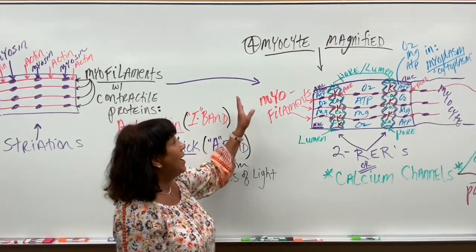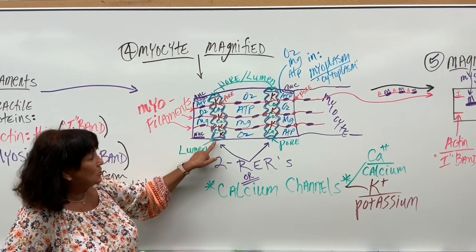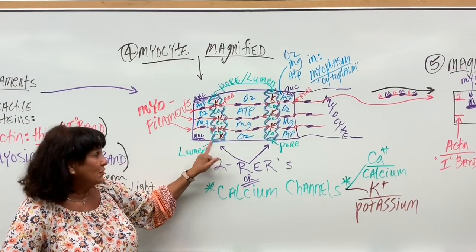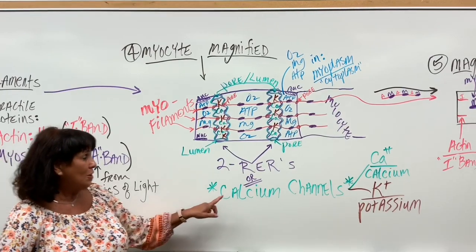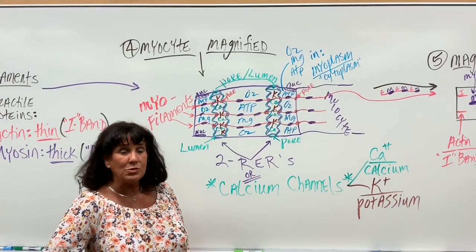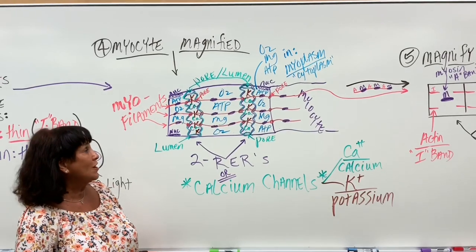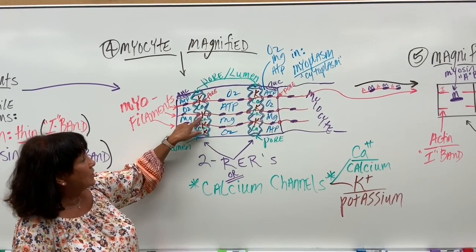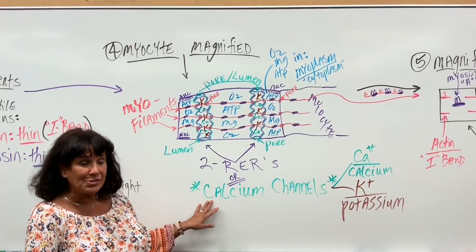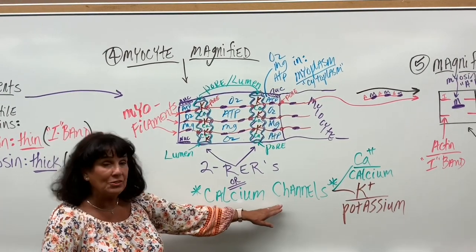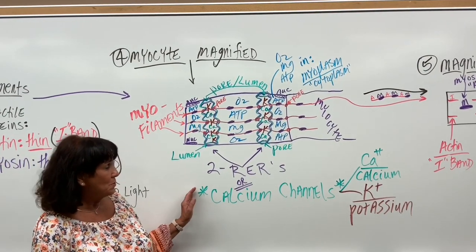Here is a skeletal muscle cell, sort of magnified. I put the two RERs in here, and you already know muscle tissue is the only tissue that has two RERs. Now, we rename the RERs and we call them calcium channels. Why? Because they store calcium and they store potassium, which are necessary for muscle contraction. So we have calcium (CA) and potassium (K) in here. The preferred name for the RERs in muscle tissue is calcium channels, because there are blood pressure meds called calcium channel blockers.